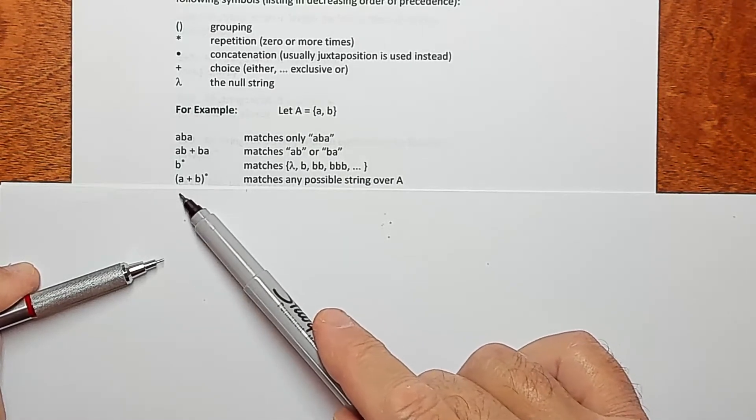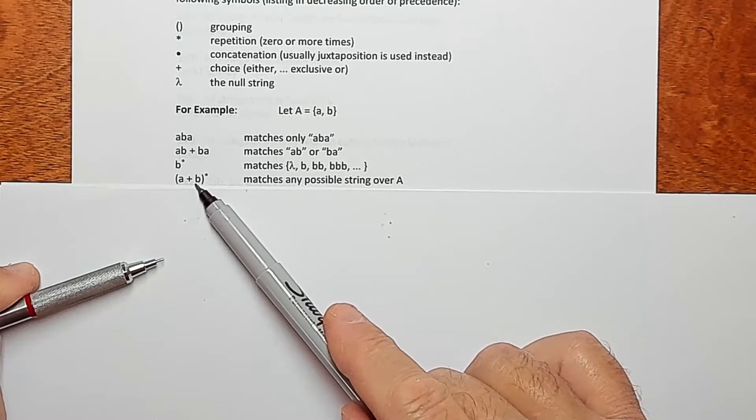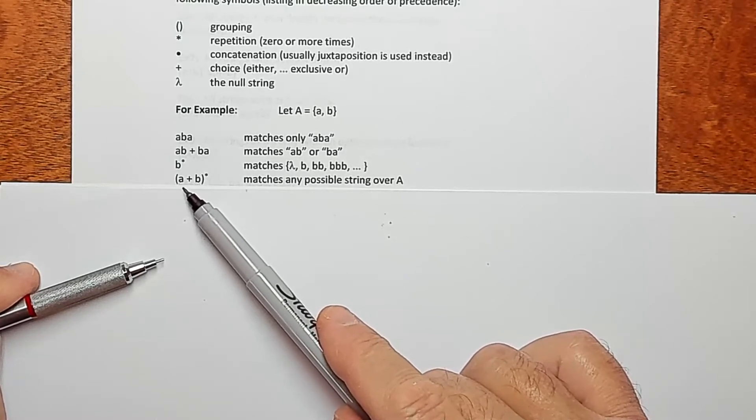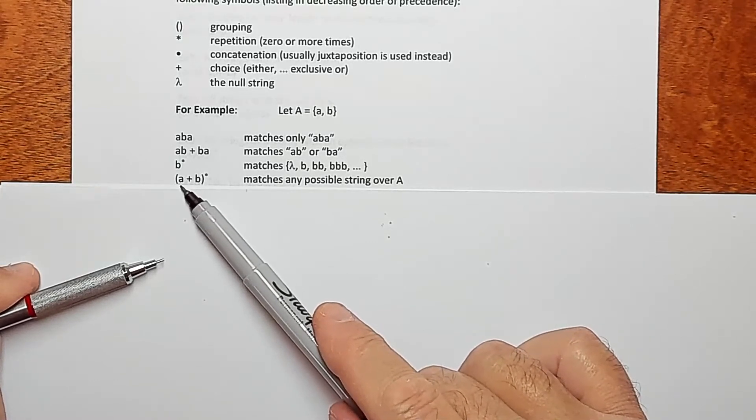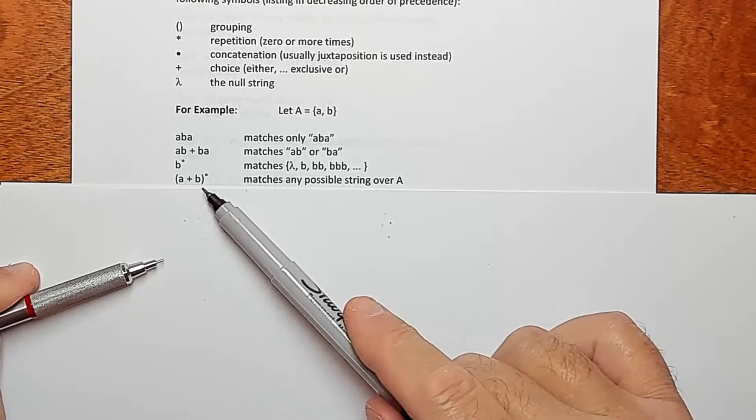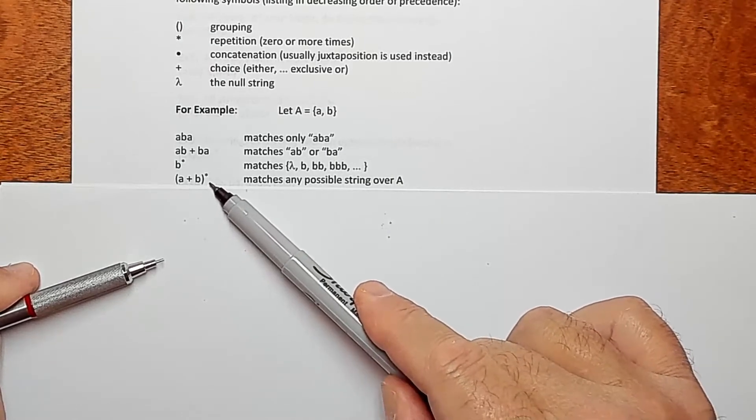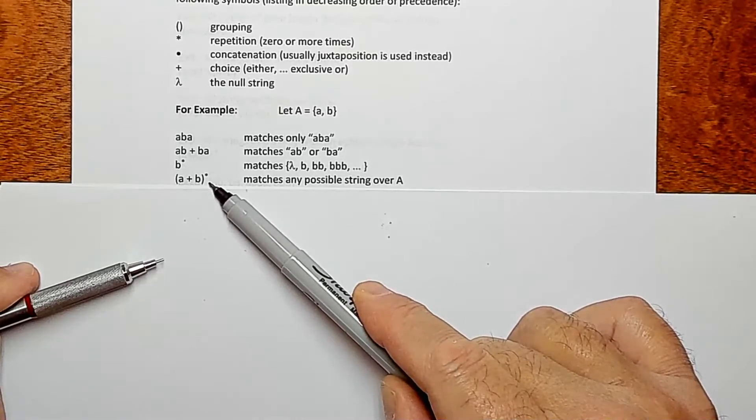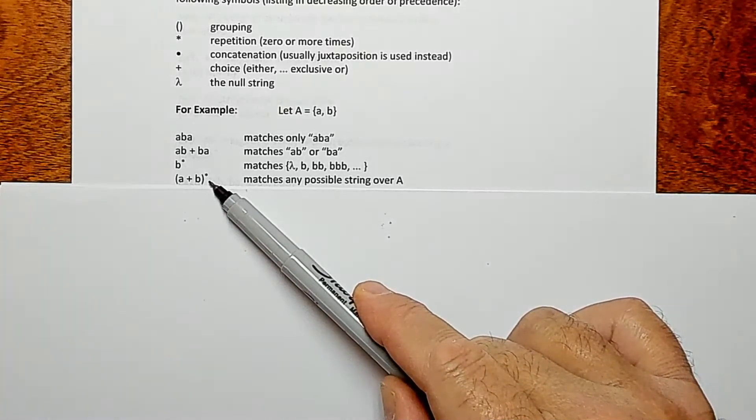And since A or B is our entire language, basically we can generate any string that's possible to create in the language. Because we do what's inside the parentheses zero or more times. So we could just repeatedly choose an A or a B as many times as you want. So this is just a convenient way to indicate really any string.